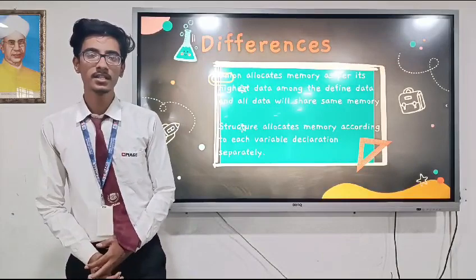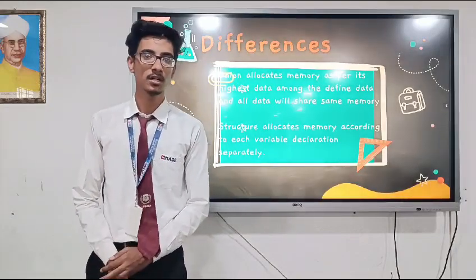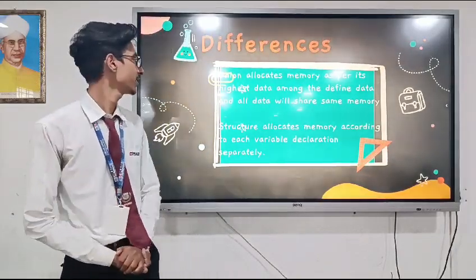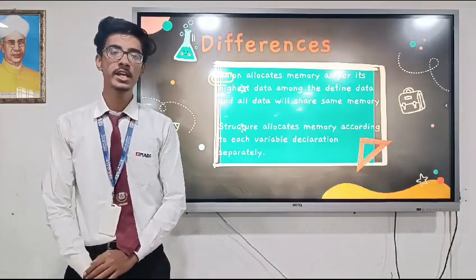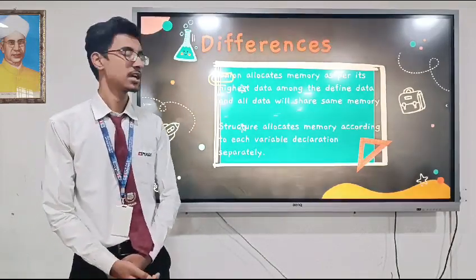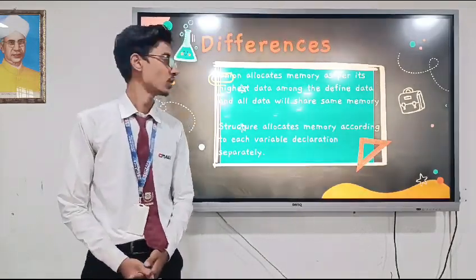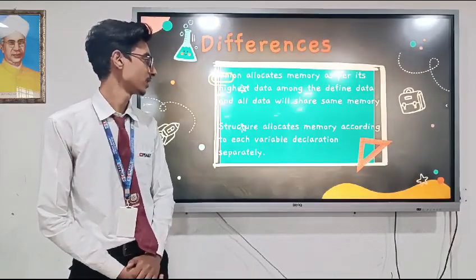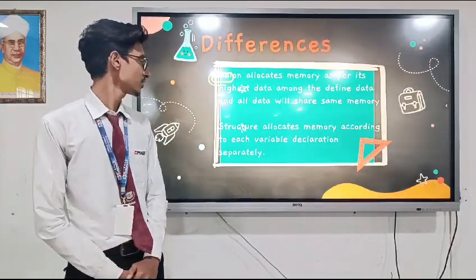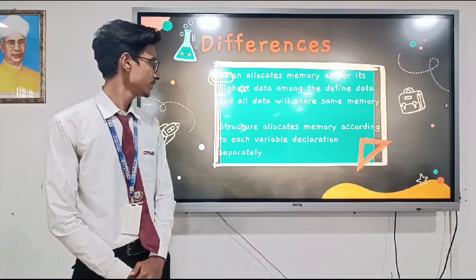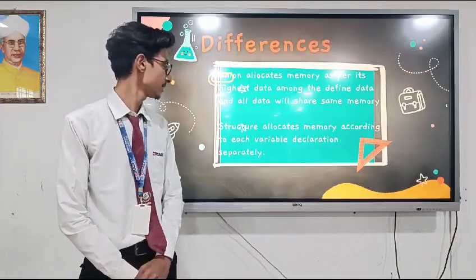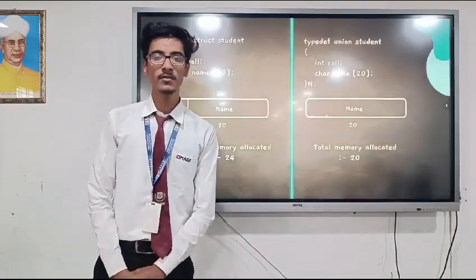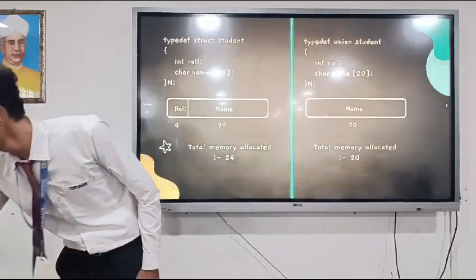As you all see in the definition of structure and union, now I am going to discuss the major differences. Union allocates memory as per its highest data type among all defined data, and all the data will share same memory. On the other hand, structure allocates memory according to each variable declaration separately. Let me make it easier for you by showing you an example.